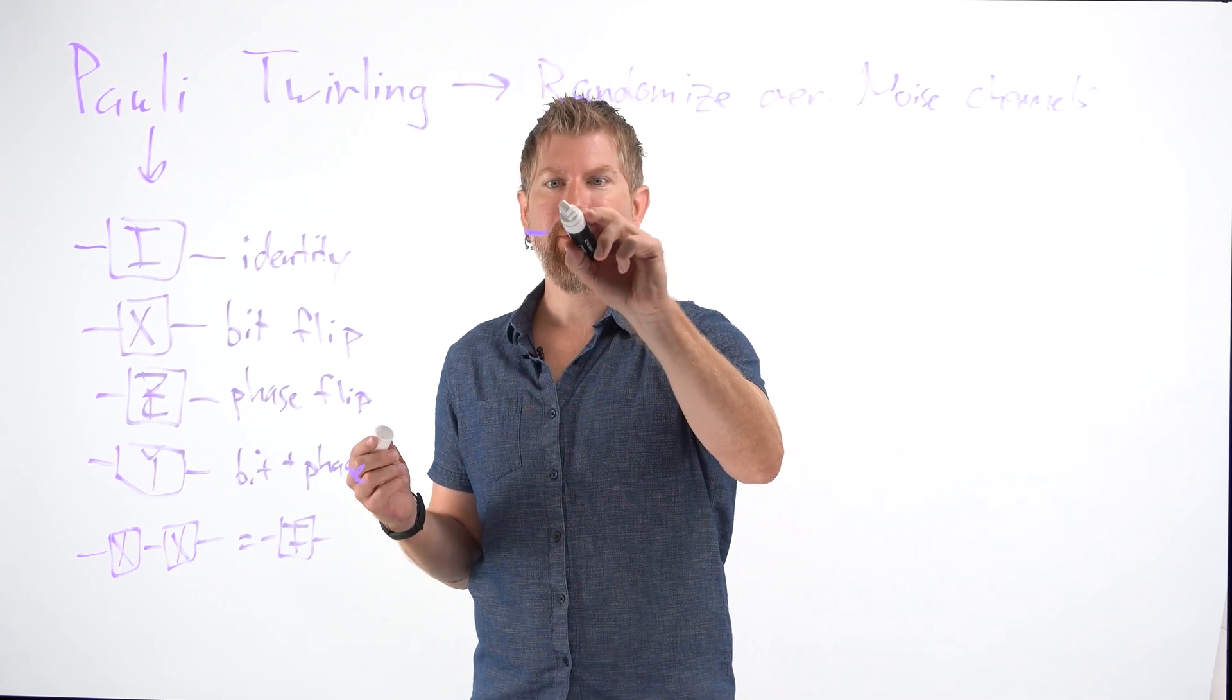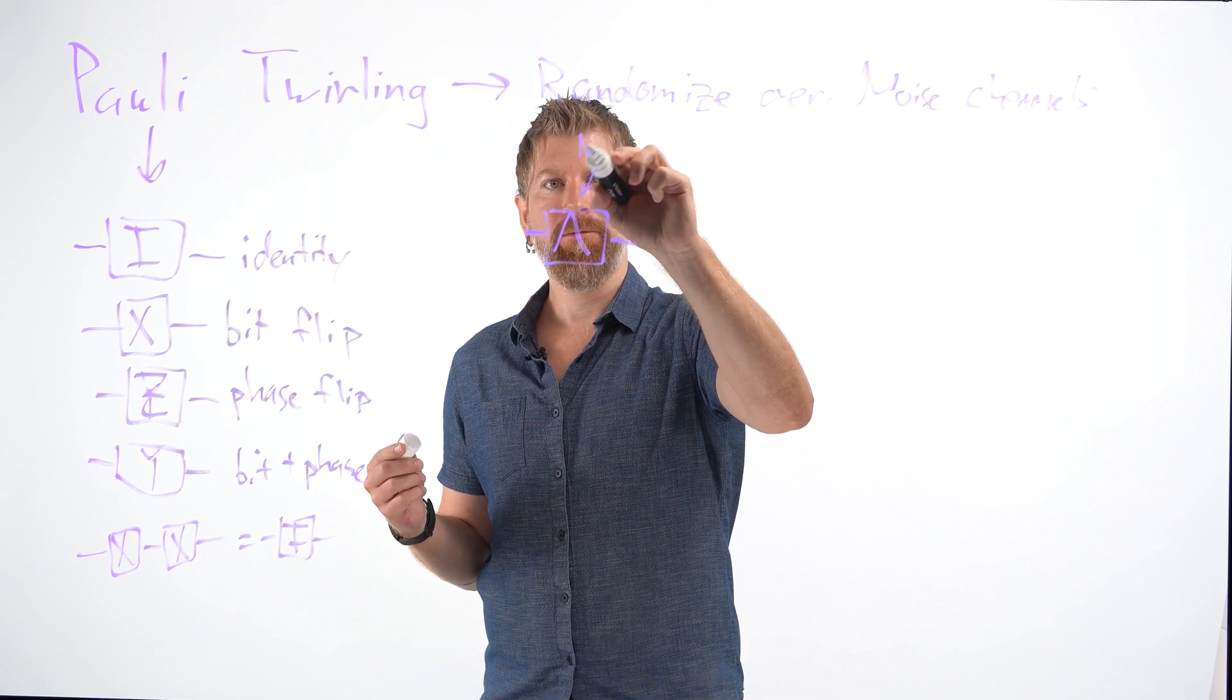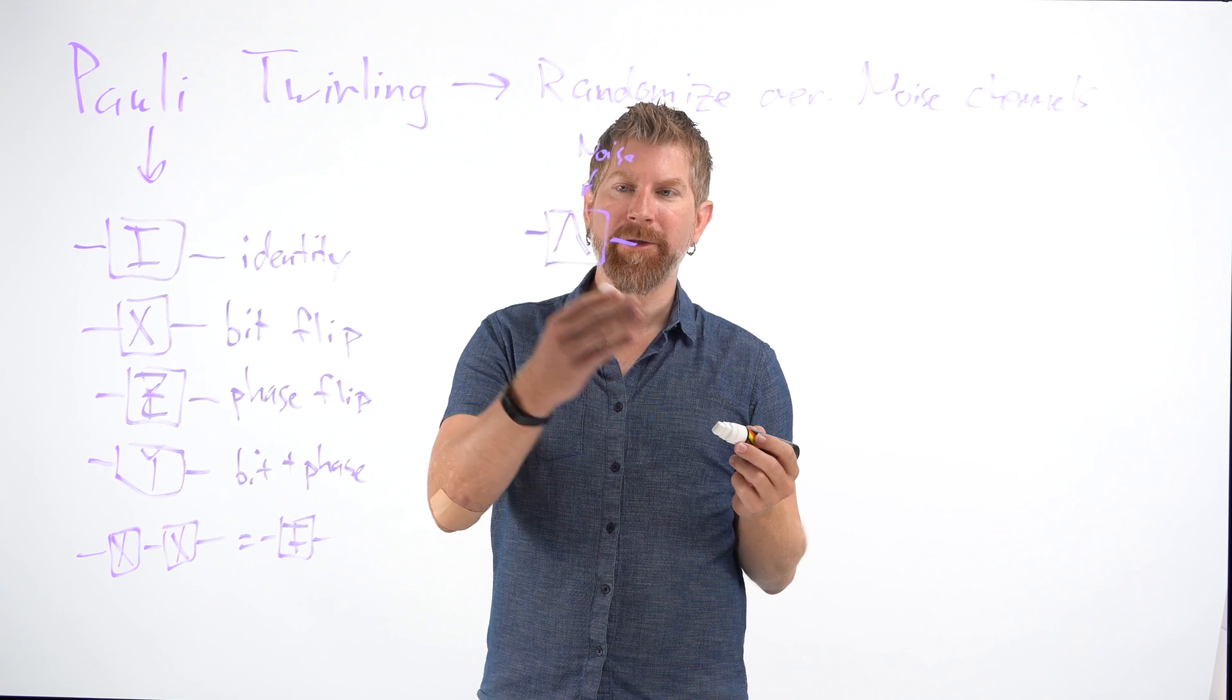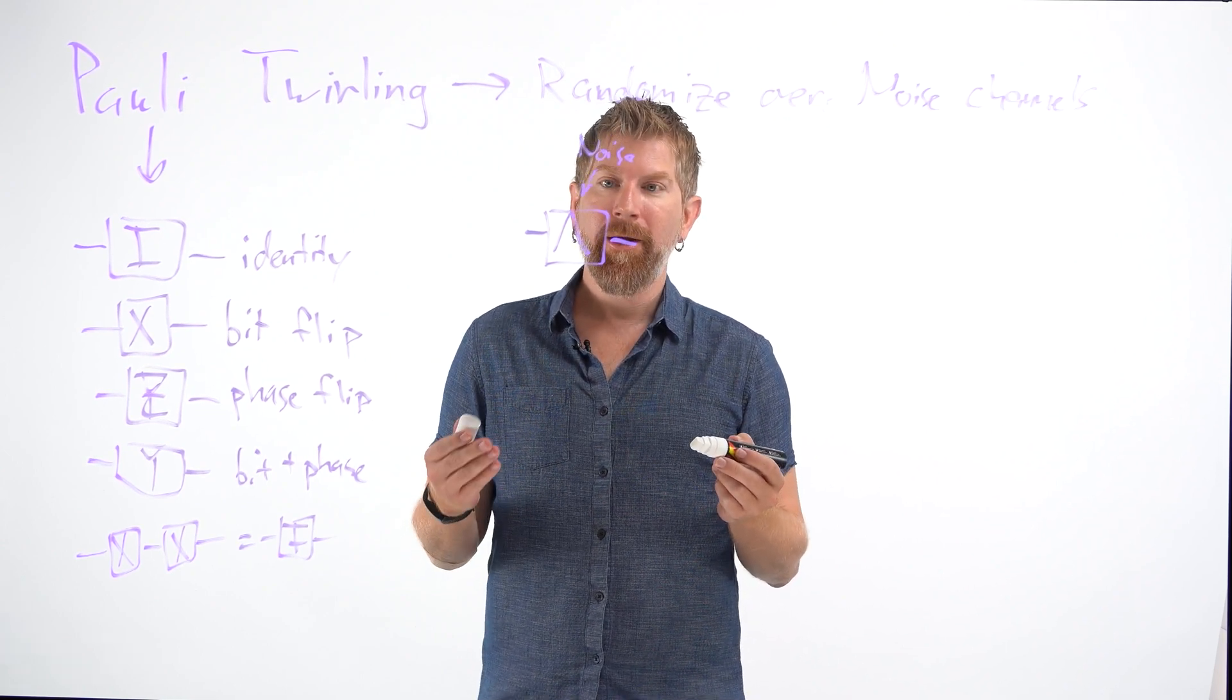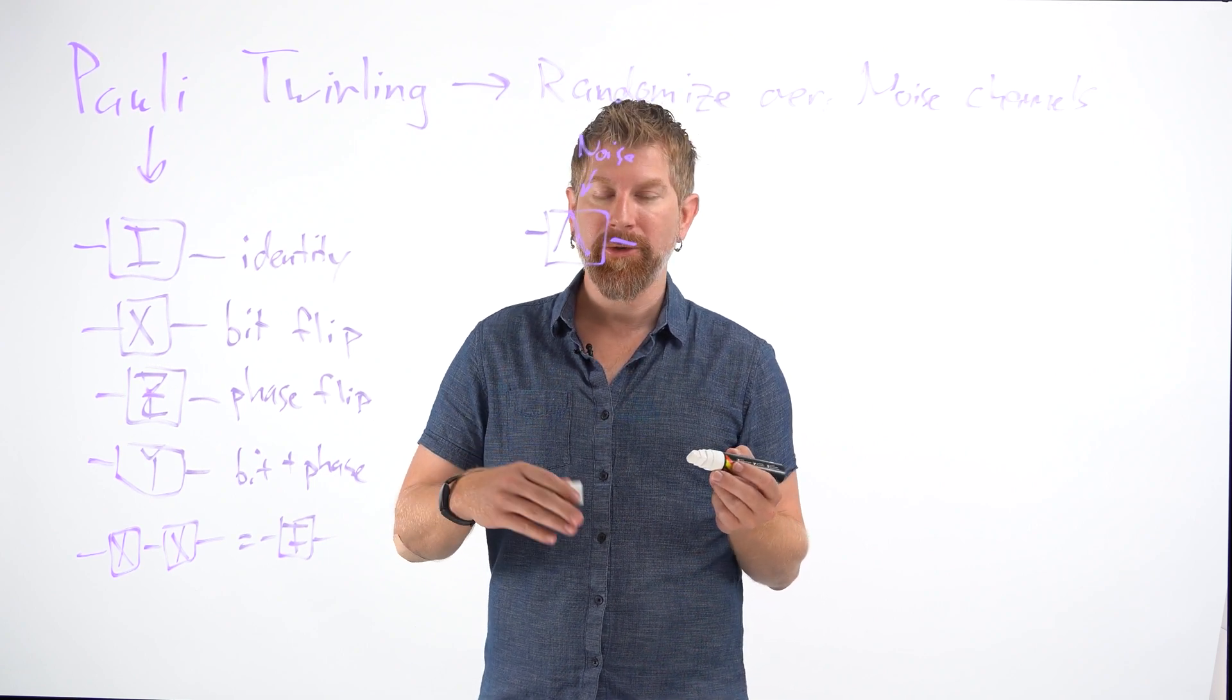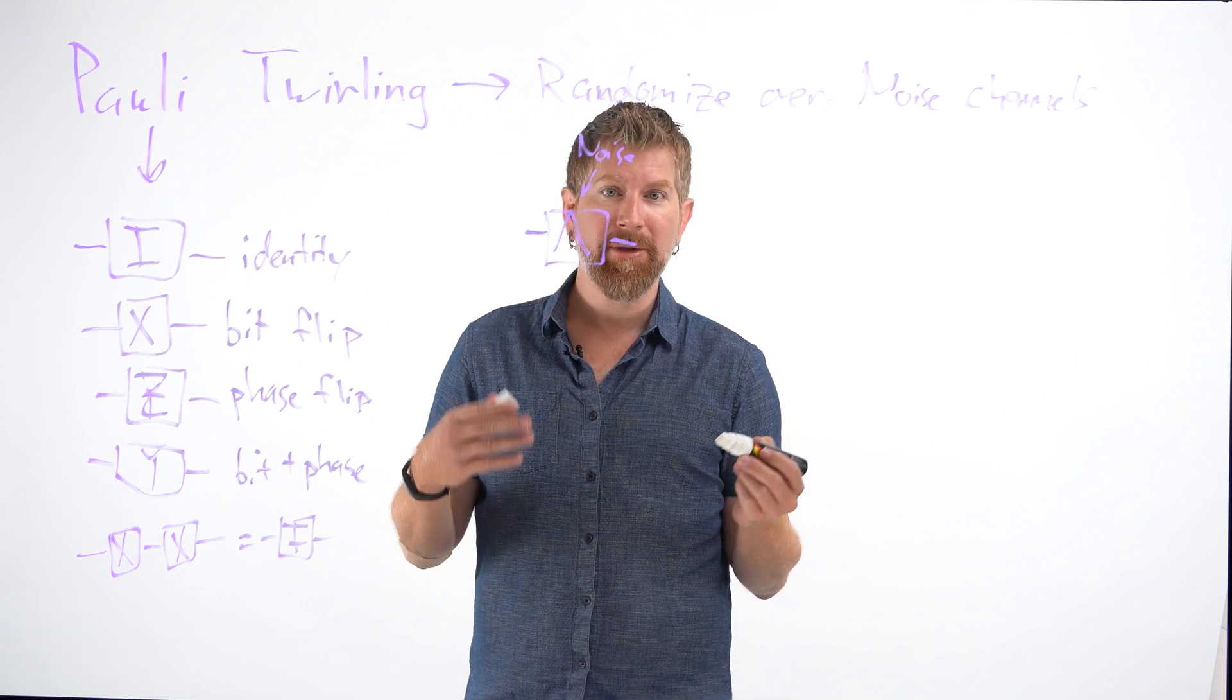So let's say I have some sort of noisy operation. We'll call it lambda. The qubit's going to see this and it's going to be in the state of the algorithm or whatever circuit you're trying to run. We can get a benefit by randomizing over those qubit states so that we can remove coherent error from the processes.